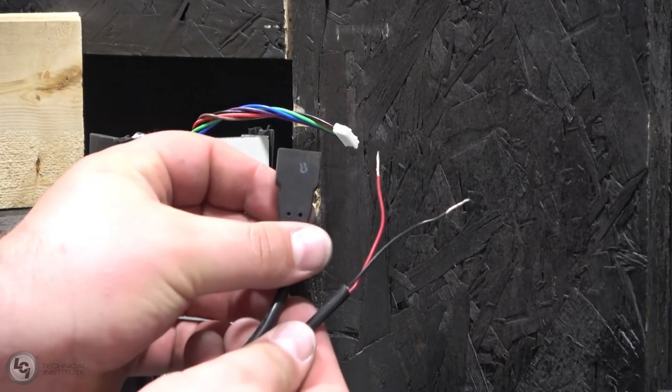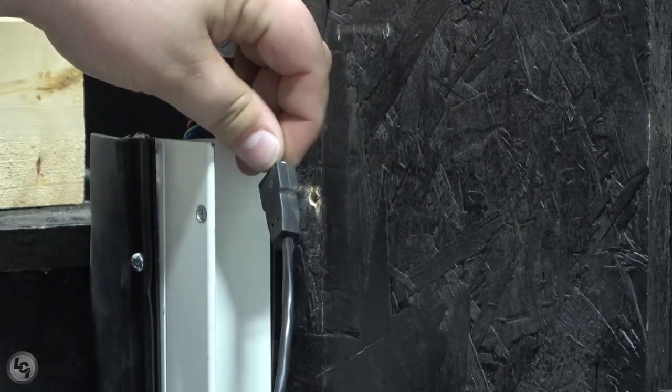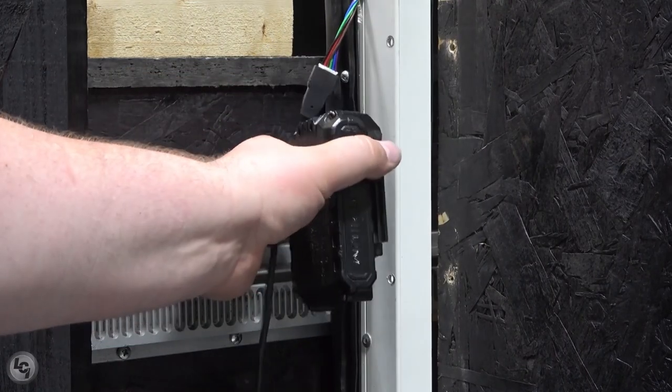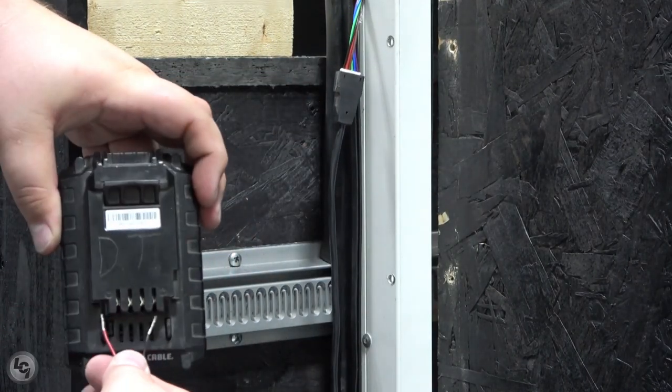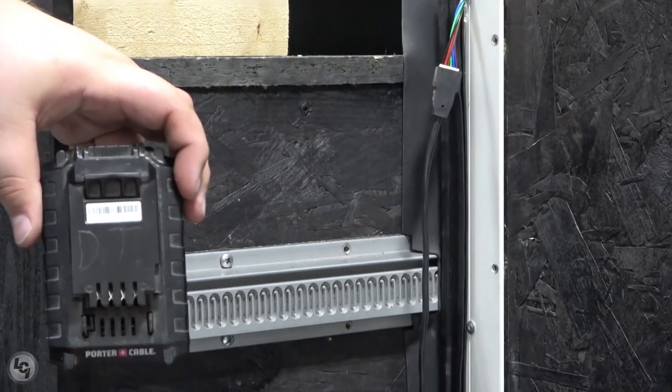To reinstall the column, we will once again be utilizing our jumper harness to connect to the motor. Once connected, you will again use a drill battery to actuate the column inward until it is seated properly. Be careful when doing this to not pinch your wire harness between the column and the sidewall.